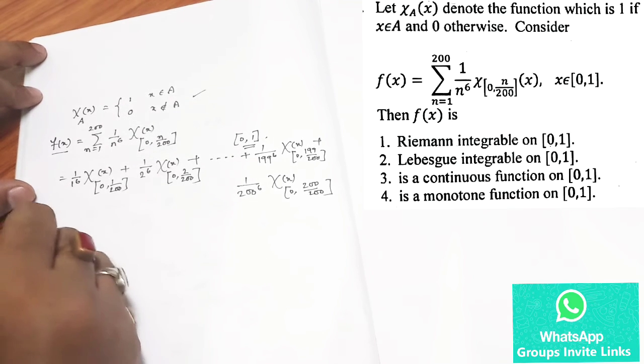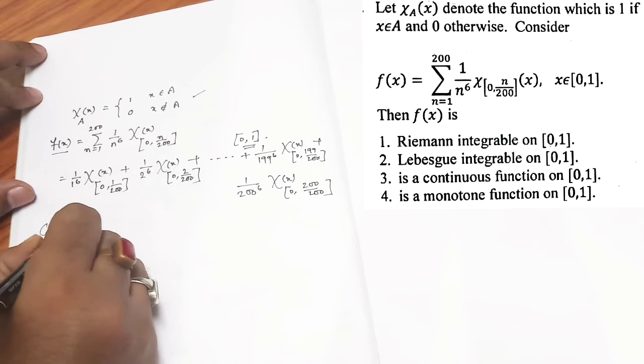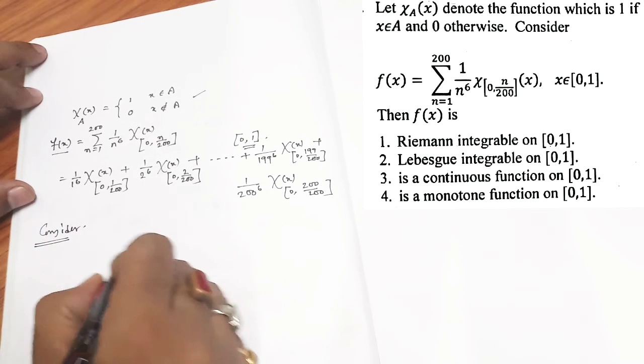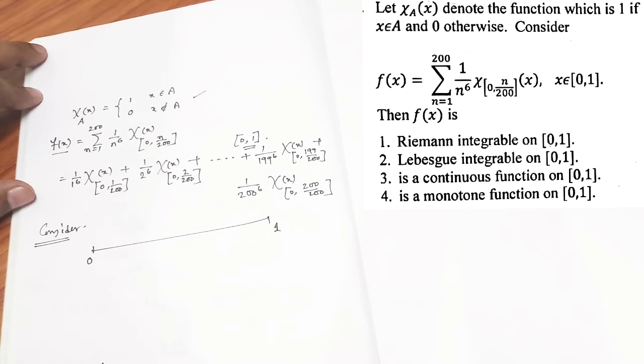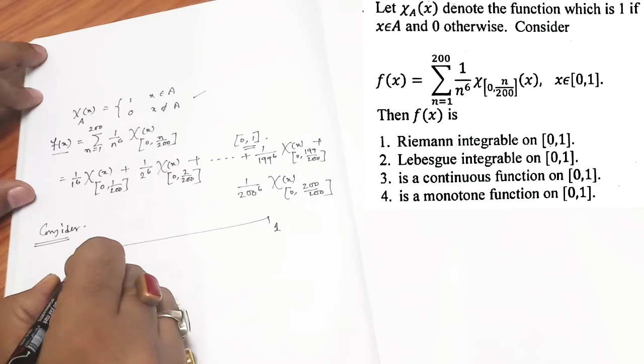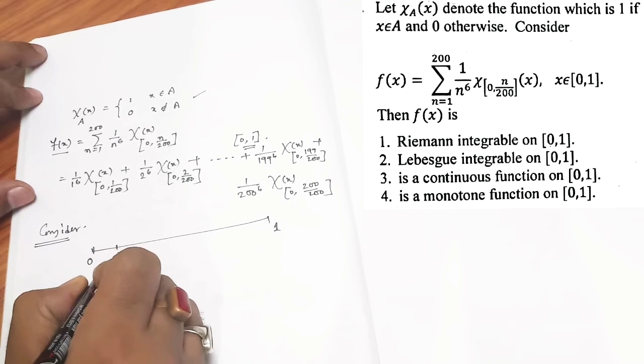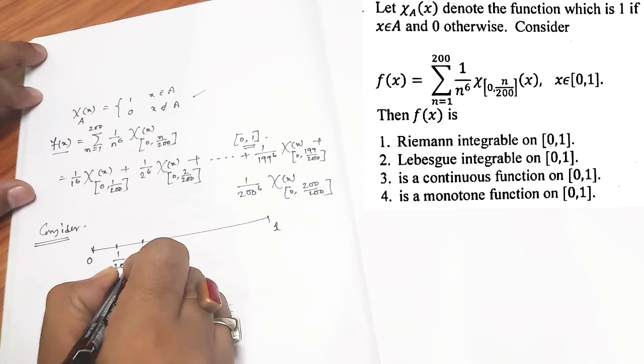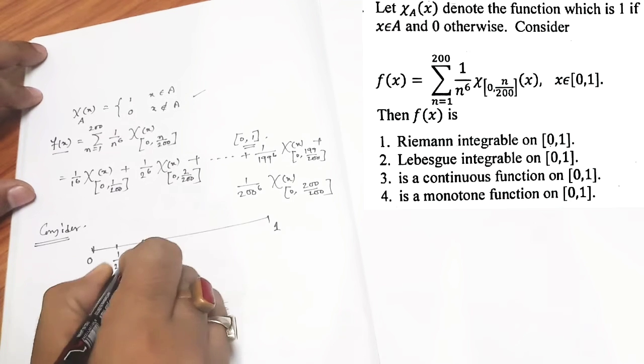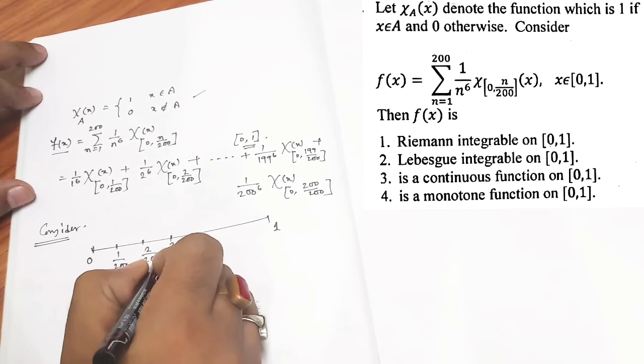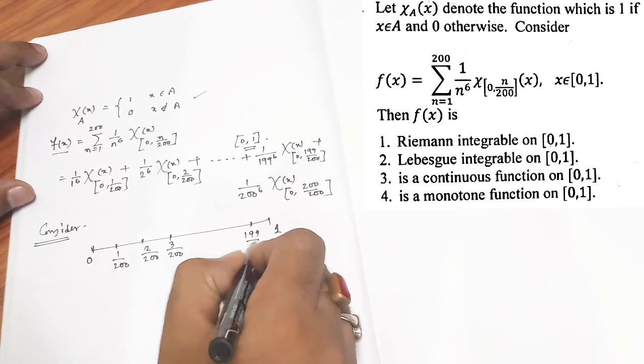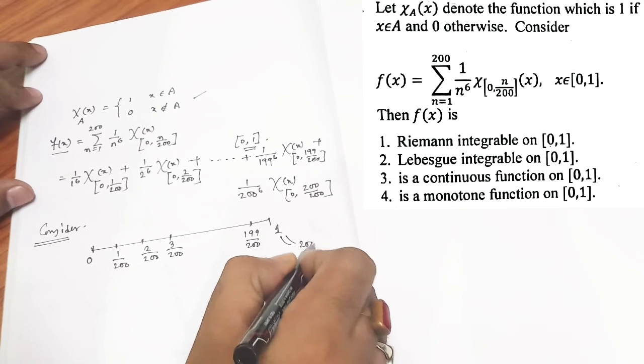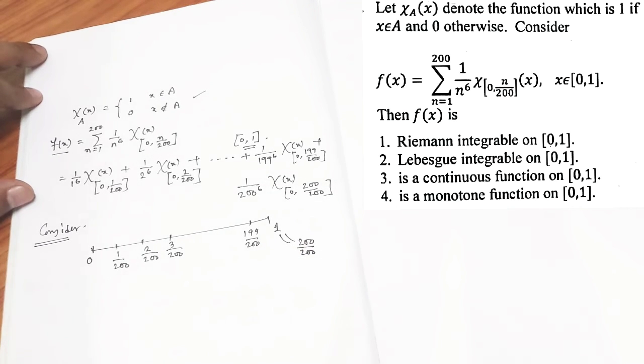Now consider, suppose this is 0 to 1, and you are considering the sub-intervals like this way: 1/200, here it is 2/200, here it is 2/200, 3/200, and so on. It is 199/200 and this one is 200/200. Simply you have done a partition.